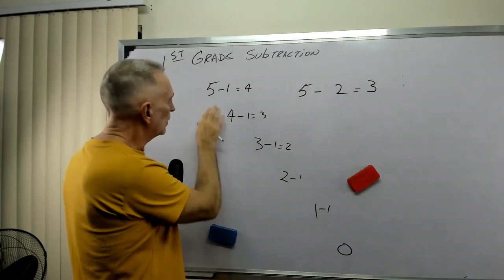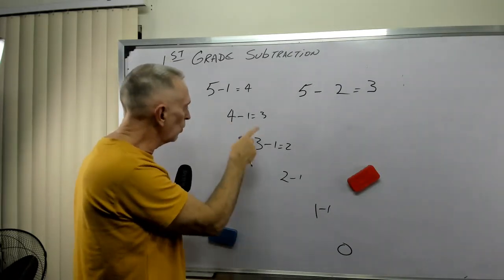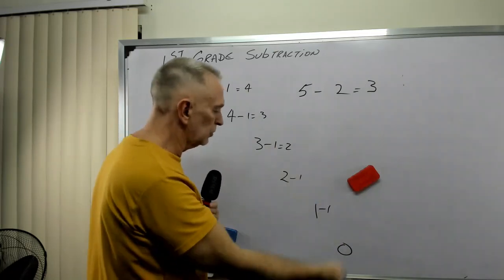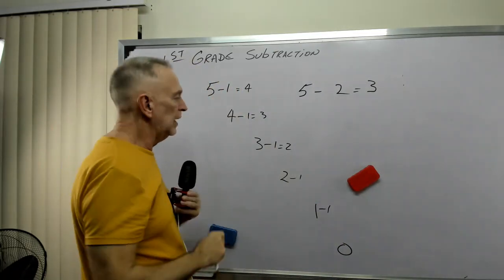So learn to count backwards by one. Five, four, three, two, one, zero. And that means you're subtracting one each time.